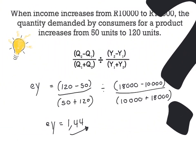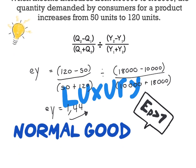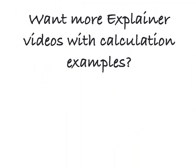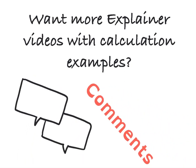The positive value indicates that we are dealing with a normal good. Since our calculated value is greater than 1, this indicates we are dealing with a luxury good. If the value had been positive but smaller than 1, that would have indicated a necessity. That concludes our video for today. If you want more explainer videos with step-by-step calculation examples, please let me know in the comments below. Thank you all for watching and I'll see you again next time.